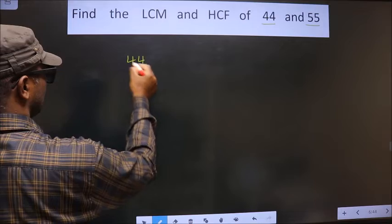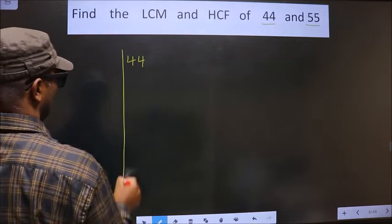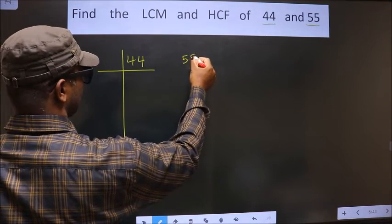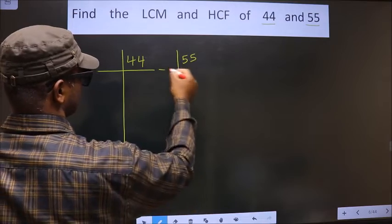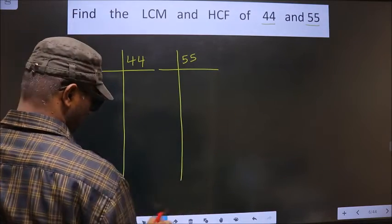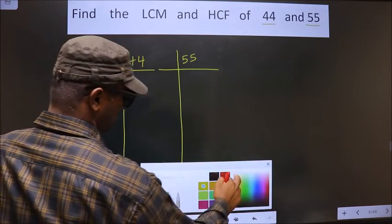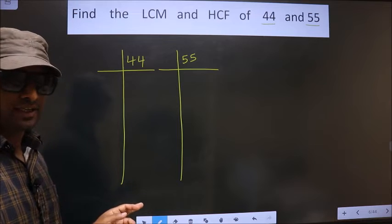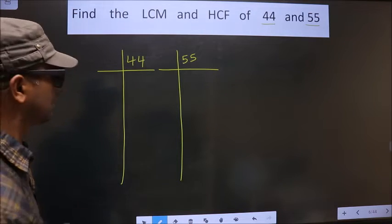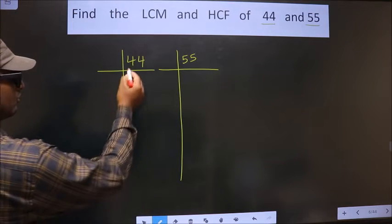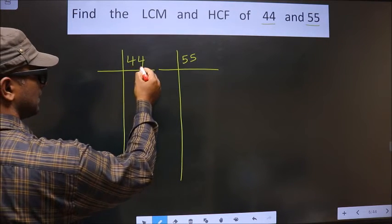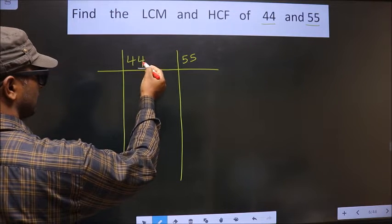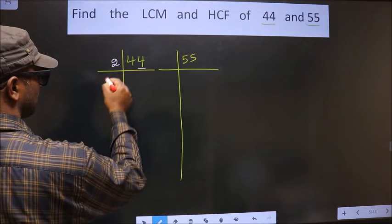We have 44 and 55. For the number 44, the last digit is 4, which is even. So we take 2 here.